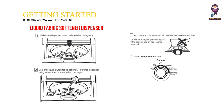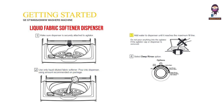Liquid Fabric Softener Dispenser: 1. Make sure the dispenser is securely attached to the agitator. 2. Use only Liquid Diluted Fabric Softener. Pour into the dispenser using the amount recommended on the package. 3. Add water to the dispenser until it reaches the maximum fill line. 4. Select the Deep Rinse Option.